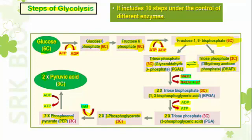PEP — phosphoenol pyruvate — is the same compound you studied in the C4 pathway. The phosphoenol pyruvate then releases its phosphate group, which combines with ADP to produce ATP. Finally, phosphoenol pyruvate is converted into pyruvic acid — a 3-carbon compound — and 2 molecules of pyruvic acid are produced overall.